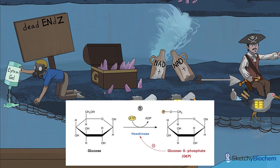You might see this enzyme referred to as glucokinase, which is found in the liver and pancreas. Glucokinase serves as a hormone-dependent sensor for glucose metabolism. We'll talk more about the differences between hexokinase and glucokinase in the glycogen synthesis sketch.